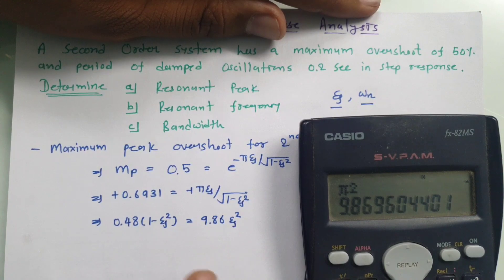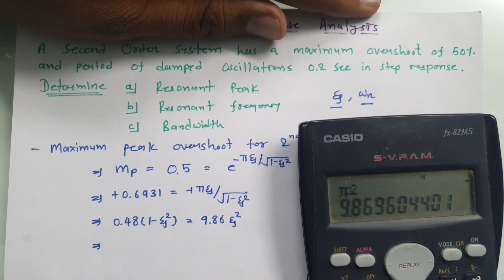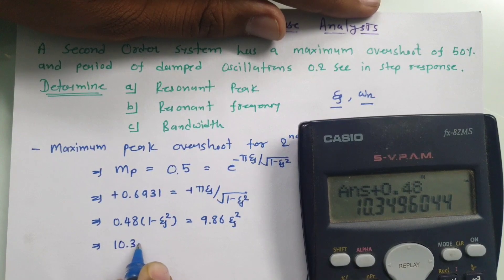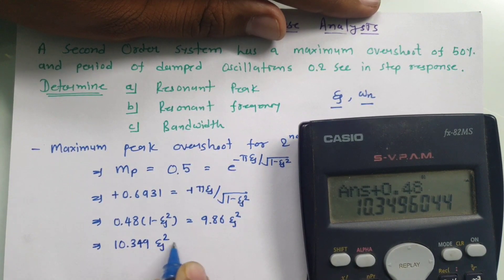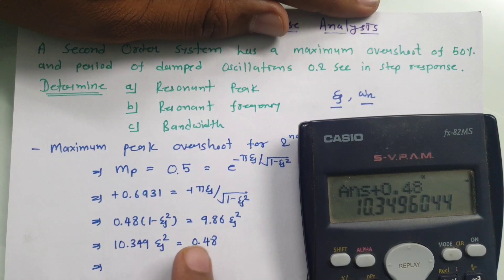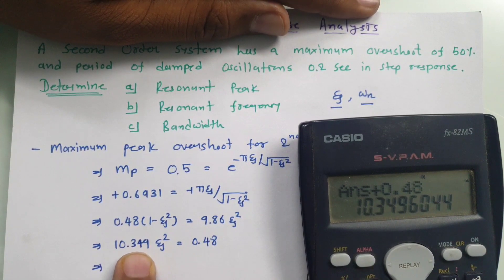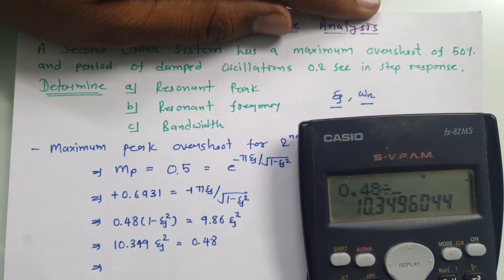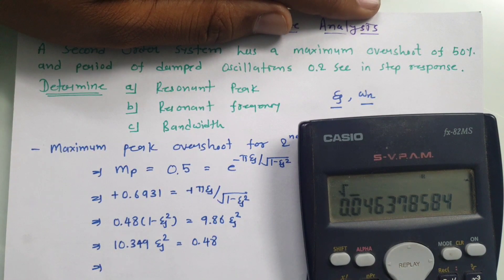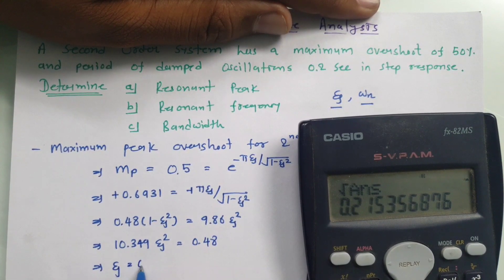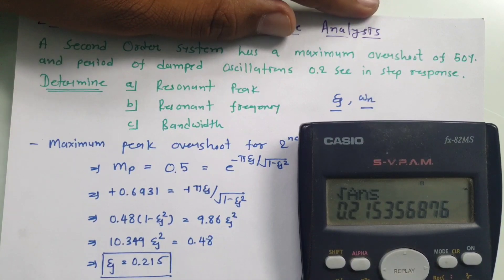Expanding and collecting the ζ² terms on one side: 0.48 = 9.86ζ² + 0.48ζ², giving 10.349ζ² = 0.48. Therefore ζ² = 0.48 / 10.349, and taking the square root, ζ = 0.215.